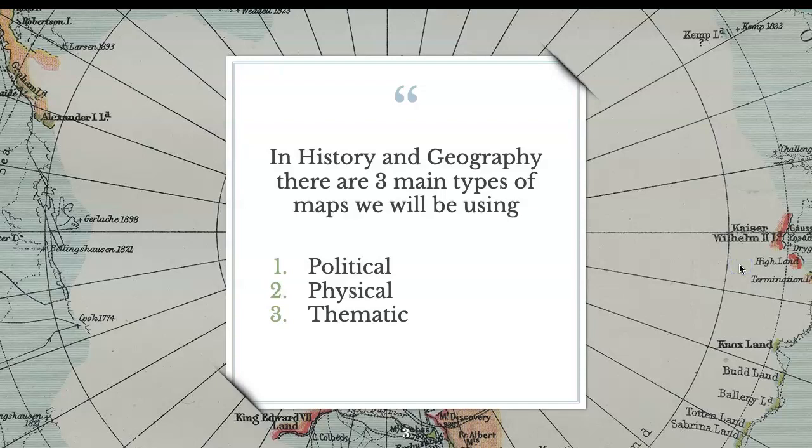In history and geography, there are three main types of maps we will be using: political, physical, and thematic.